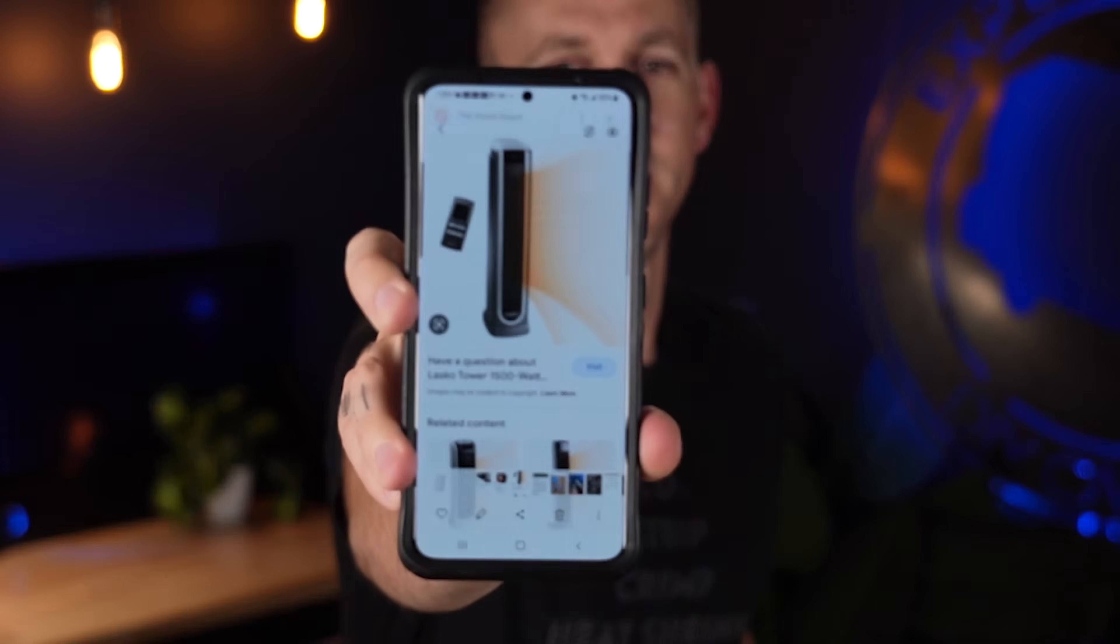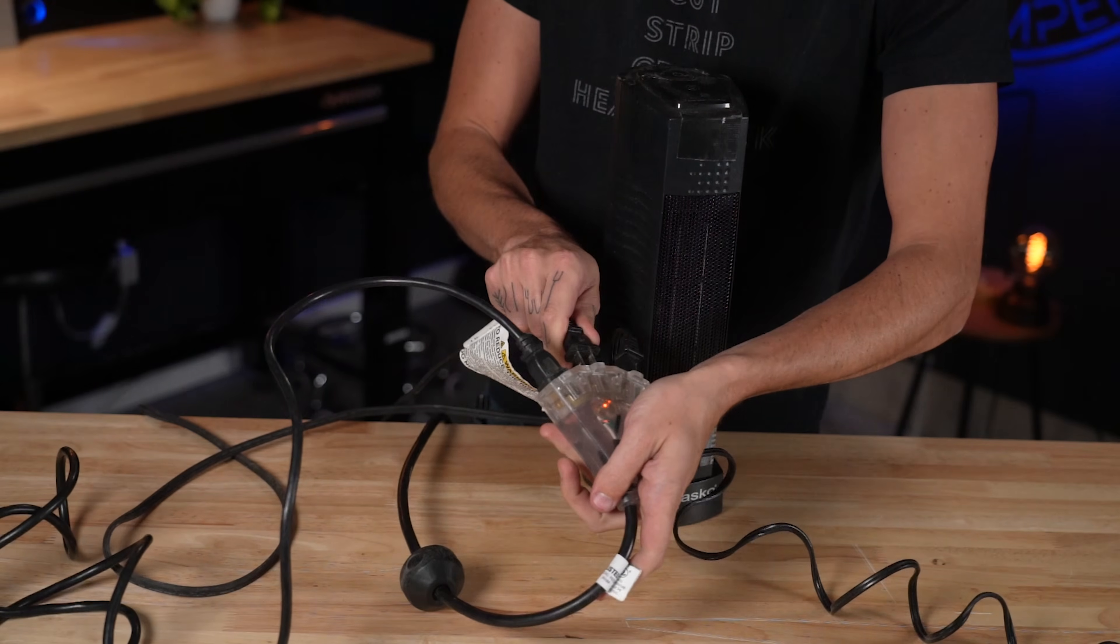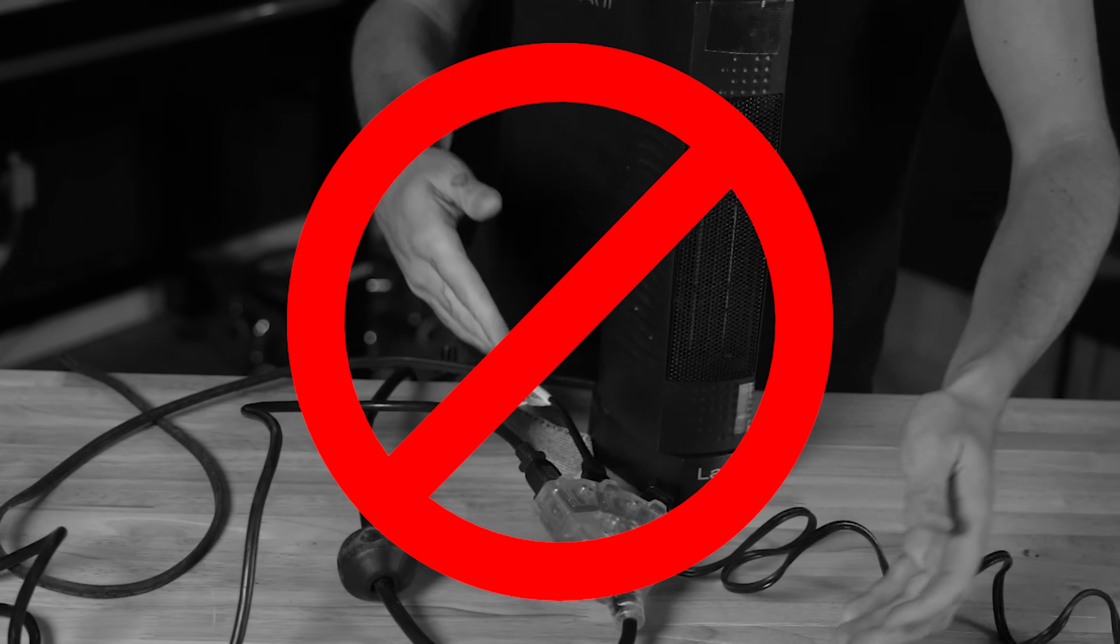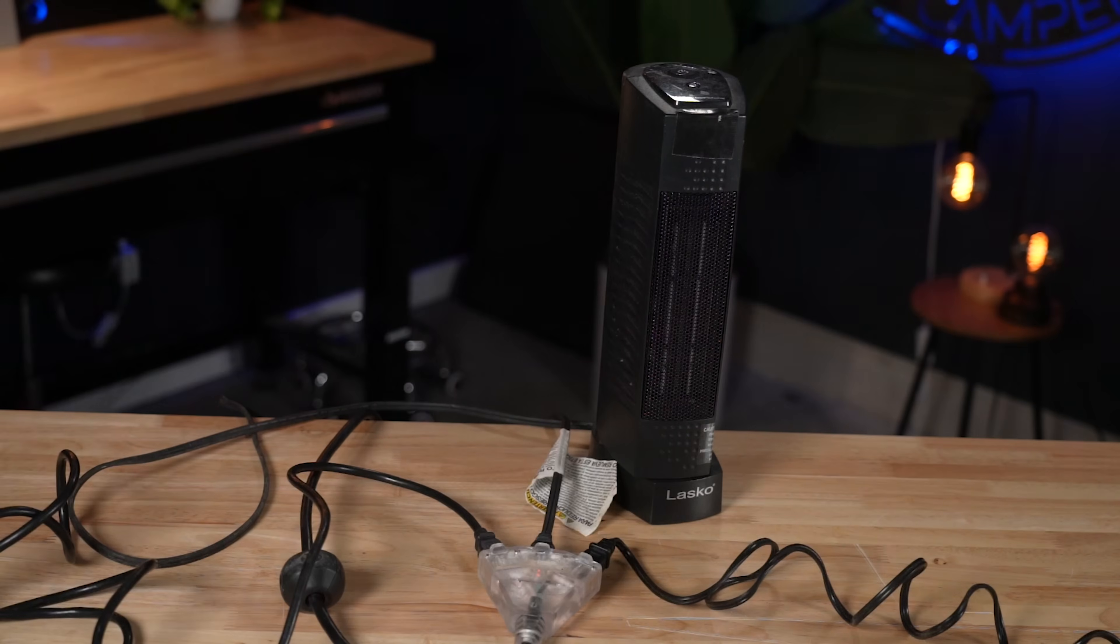Let's get started with electric space heaters. There's really only two considerations for safety with electric space heaters. The first one is don't plug the electric space heater into a power strip or an extension cord. The second one is don't put dirty clothes or something like that on top of the space heater. Aside from that there's really no other safety considerations when it comes to electric space heaters.